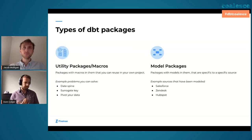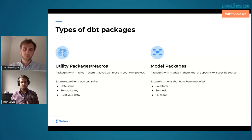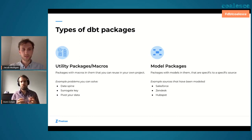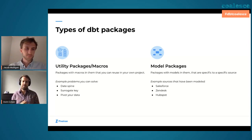Then we have model packages. These take raw data, generally from Fivetran, land that normalized schema for you, and transform it into analytically ready models so you can start putting them into your reporting layers. Examples — all open source — include Salesforce, which Jacob will touch on, Zendesk, HubSpot, Facebook, Google Ads, and a whole range more. These are the ones that give you that analytics transformation and modeling piece. That's a brief overview of how Fivetran works with packages, and I'll hand it off to Jacob to see how Firefly Health has used these packages.